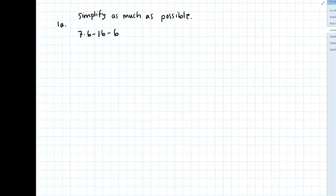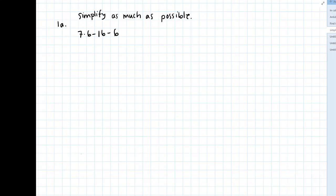So in a mathematical statement, there might be multiple things happening, and really to make sure that we all come to the same conclusion when we look at this statement, there ought to be an order in which we do these operations. And so if you remember, there's one acronym people use for this, and there are many others, but the one that I learned was PEMDAS.